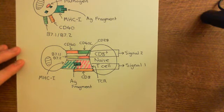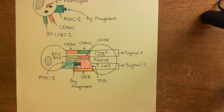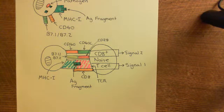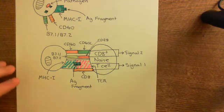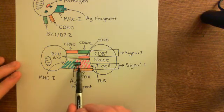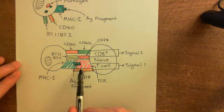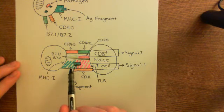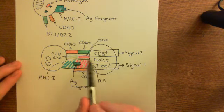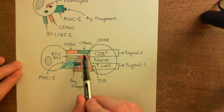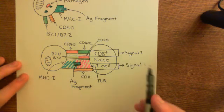It will then go to the lymph node and find a CD8-positive naive T-cell which has a perfect T-cell receptor for this antigen fragment. It will activate this CD8-positive naive T-cell by forming an immune synapse. The binding of the T-cell receptor to the antigen fragment on the MHC class 1 molecule, and also CD8 binding to the MHC class 1 molecule, will deliver signal 1 to this CD8-positive naive T-cell, and the co-stimulatory molecules binding to their respective receptors will trigger signal 2.